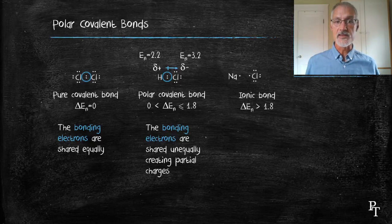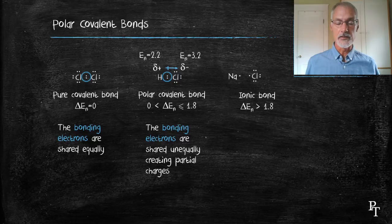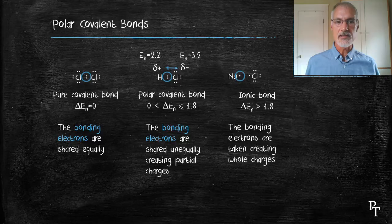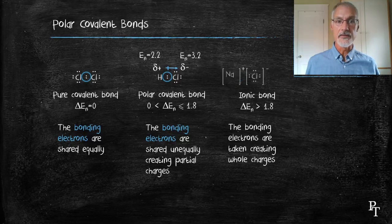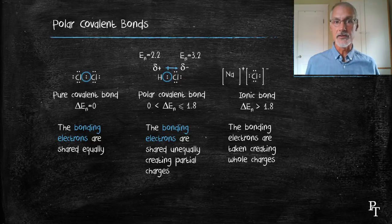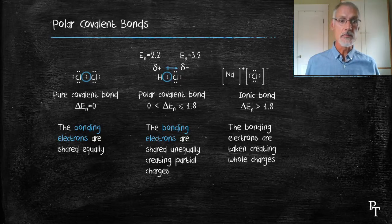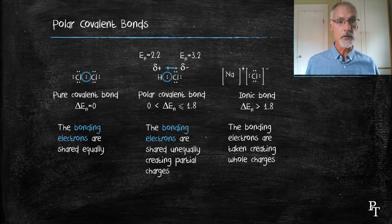In our ionic bond, where the differences in electronegativity are greater than 1.8, that lone electron isn't shared, it's essentially taken by the chlorine, and we form ions. Those ions have the whole positive and whole negative charge. When using Lewis dot diagrams, we always put square brackets around substances that are ions.